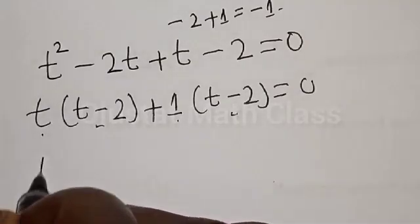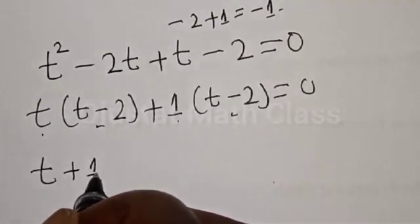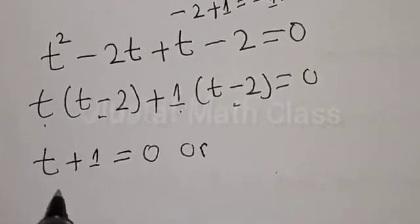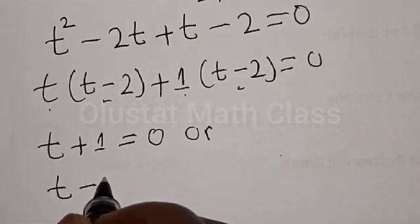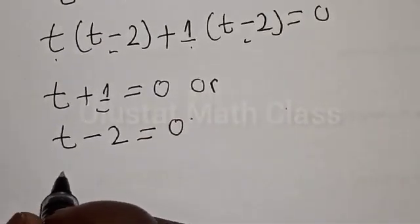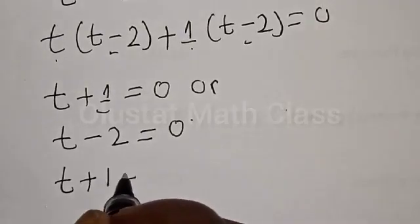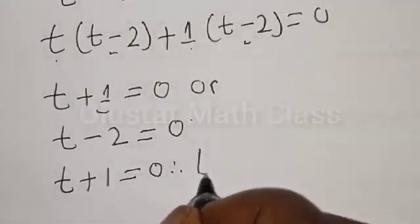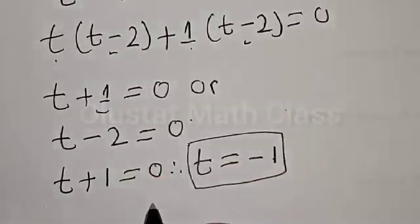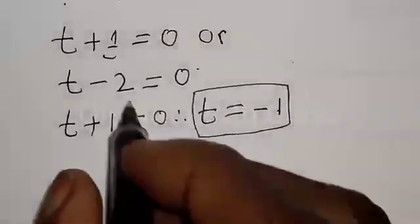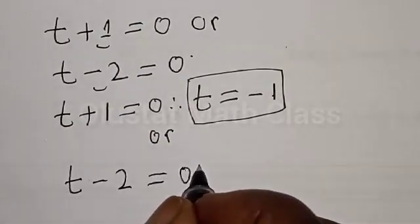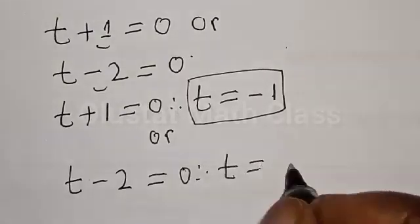We factorize: T into T minus 2, plus 1 into T minus 2, equals 0. Therefore, T plus 1 equals 0 or T minus 2 equals 0. So T is equal to minus 1, or T is equal to 2.